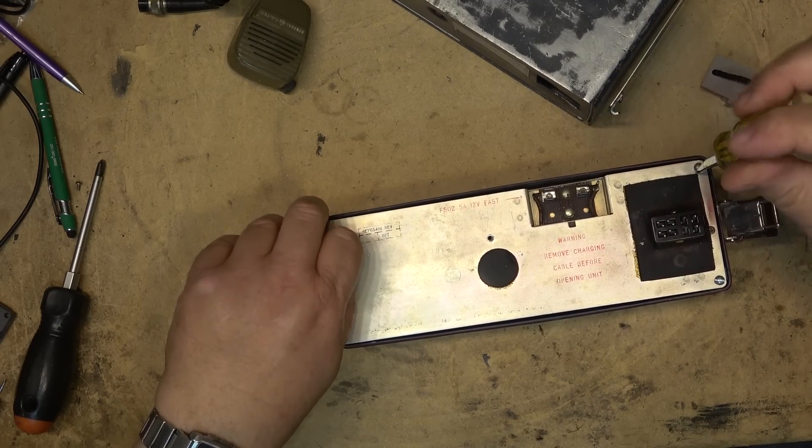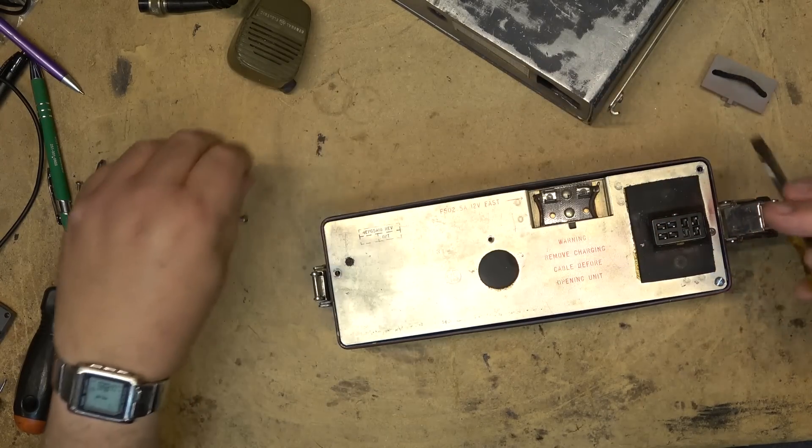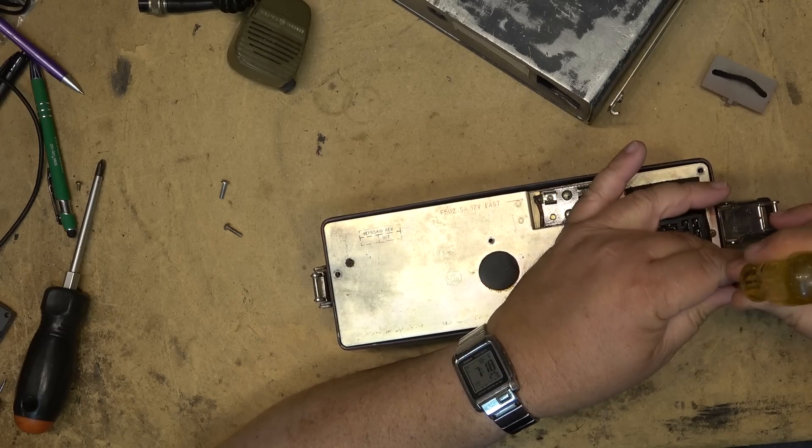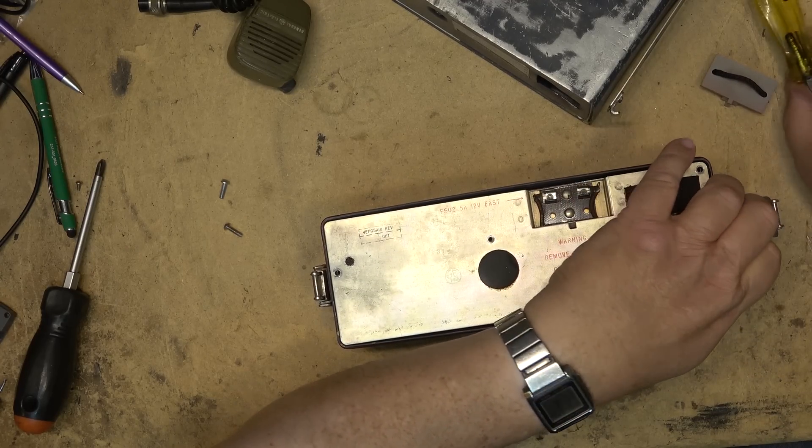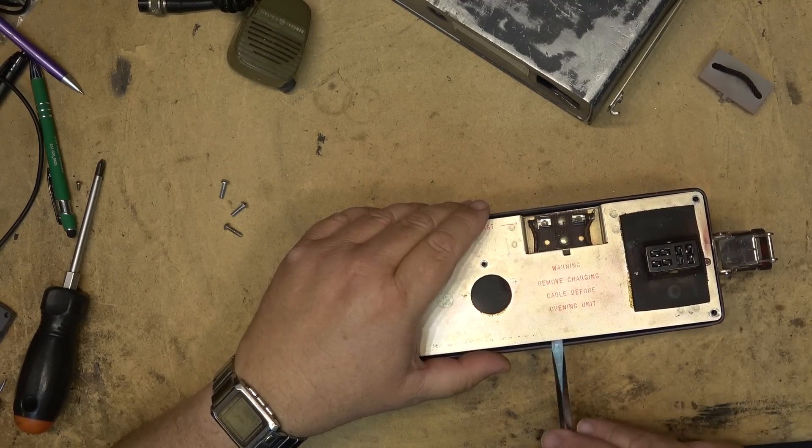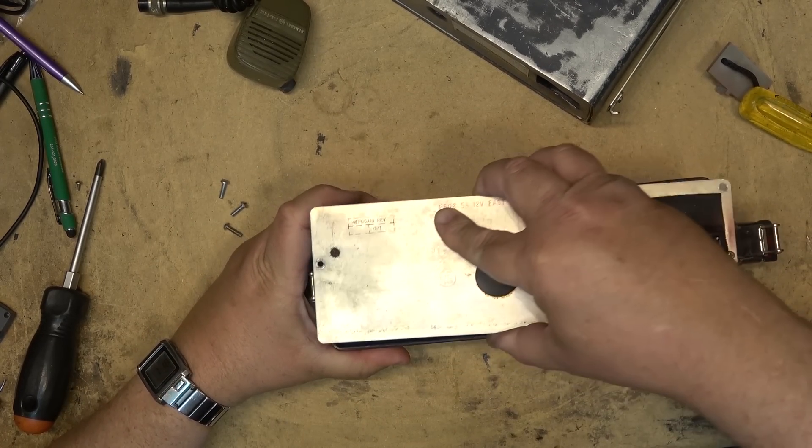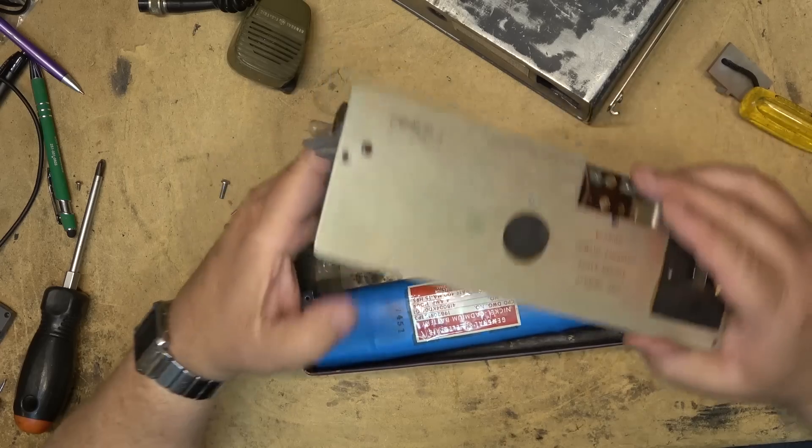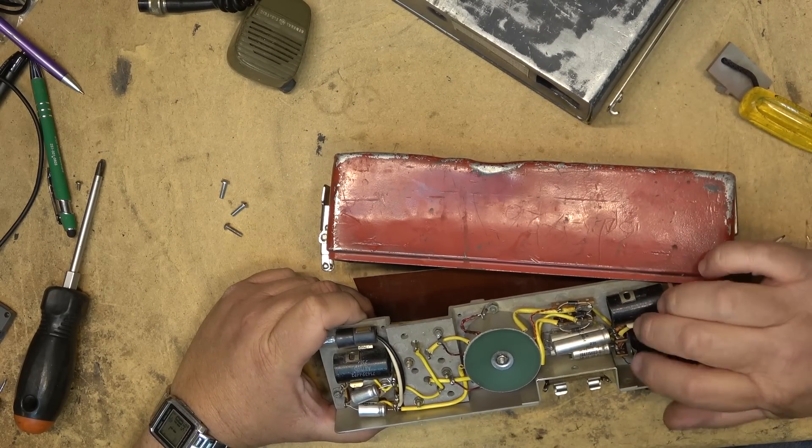I'm curious whether they're lead acid or whether it's a nickel cadmium battery. A ham radio buddy of mine gave me this radio and a bunch of other stuff. It was part of his late father's collection, so he was just going through his late father's junk pile and was coming across all this stuff that was just going to go in the garbage. So he thought maybe this might be a nice project to take apart and see what's in it.